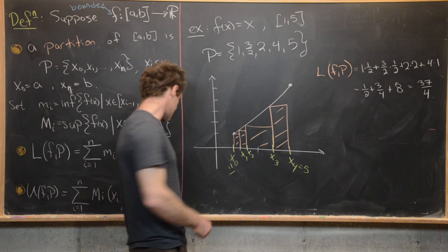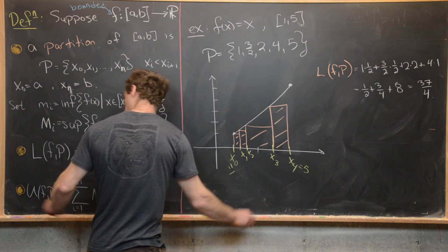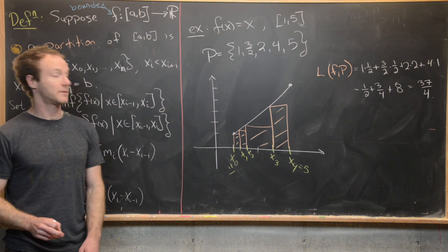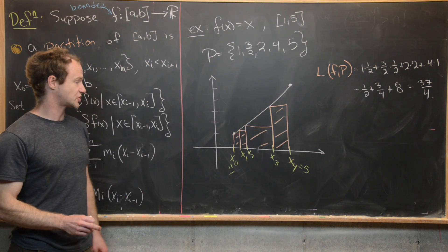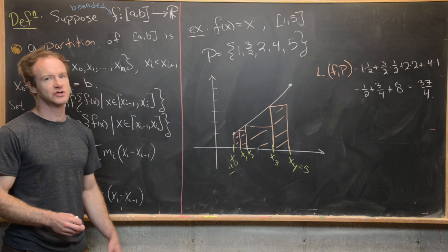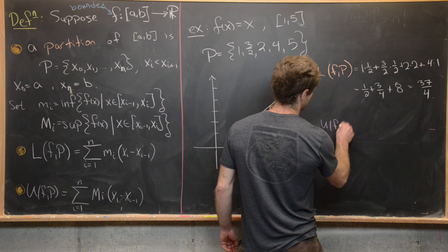Now let's maybe go ahead and also look at our upper sum. Maybe we'll do that in this purple color. So our upper sum is going to take the supremum of the function on each of these subintervals. But since this is an increasing function, that's just going to be the right-hand endpoint. So here we have U(f,p).